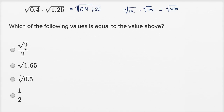And what is that going to be? Four times 1.25 would be five, but this is 0.4 times 1.25, so this is going to be 0.5. So this is going to be the square root of 0.5.